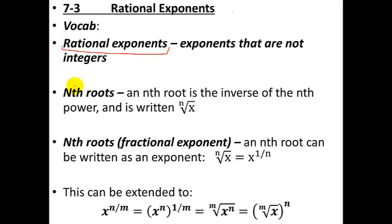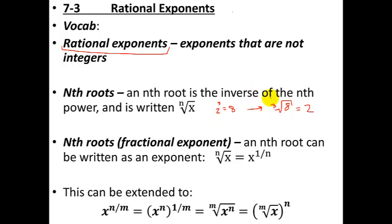Before we do that we want to give a refresher on what roots are. An nth root is the inverse of an nth power, and is written with a little n and the square root symbol. For example, if two to the third power equals eight, then the cube root of eight — you're asking yourself what number when raised to the third power equals eight? The answer is two. It's an inverse function: it takes the output and input and switches them. An nth root can be written as x to the one over n.